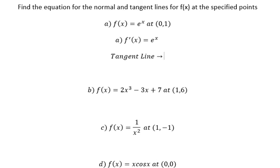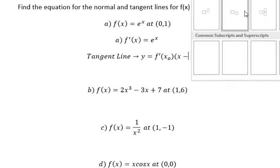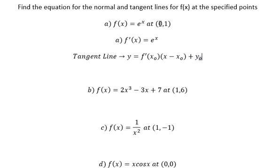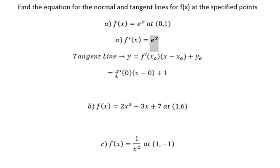The tangent line formula is: y equals the first derivative at s₀, multiplied by (s minus s₀), plus y₀. So s₀ is number zero and y₀ is number one. We put those values in: zero goes here, one goes here, and we get s plus one.